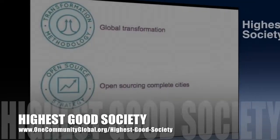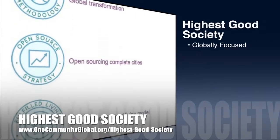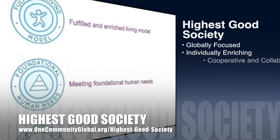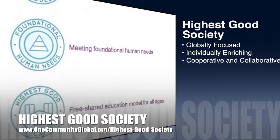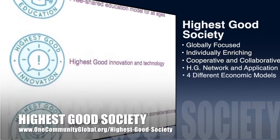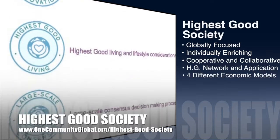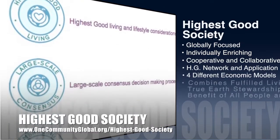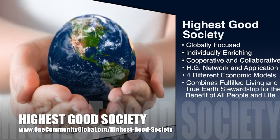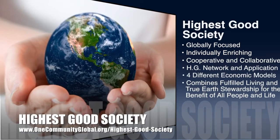One Community's approach to highest good society is globally focused, individually enriching, cooperative and collaborative, includes a highest good network and application, four different economic models, and combines fulfilled living and true earth stewardship for the benefit of all people and all life on this planet.